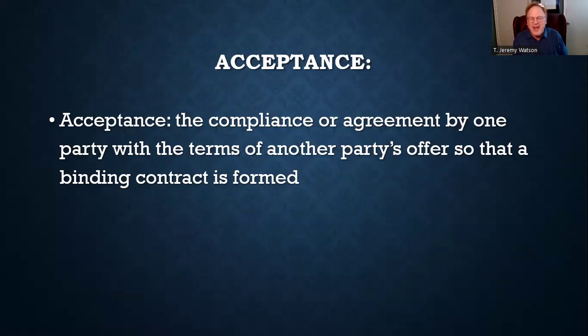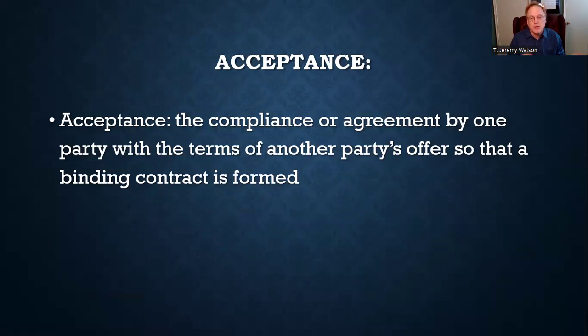Acceptance is the compliance with, or the agreement by, one party with the terms of the other party's offer. Remember that we talked about two different types of contracts: bilateral contracts — bi meaning two, lateral meaning side — and unilateral contracts, one-sided contracts. A contract always has to involve two people and an exchange of consideration. When we talk about a one-sided contract, we're not talking about a gift — we're talking about a contract where promises only go one way, versus a bilateral contract where promises go both ways.